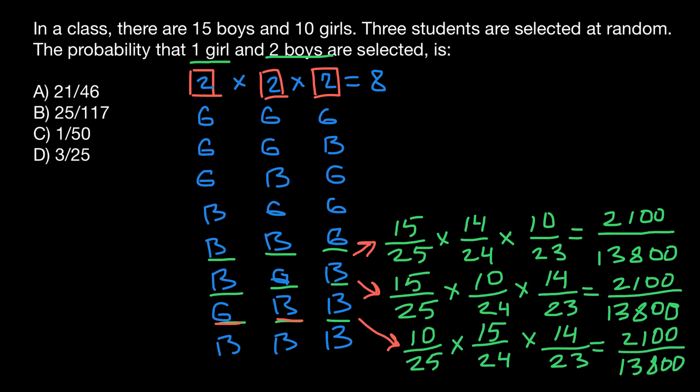And now, what we need to do is just add all these probabilities that we got here. So what are we going to get? We are going to get 2,100 plus 2,100 plus 2,100 over 13,800, and we are going to get 6,300 over 13,800.